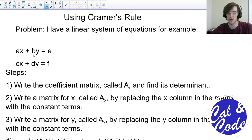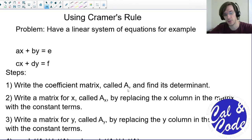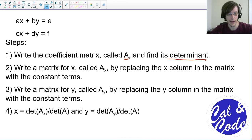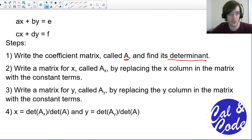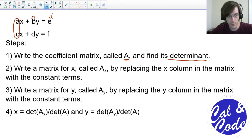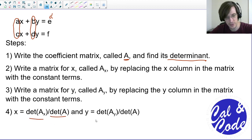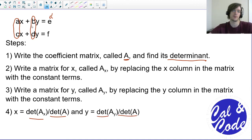Now let's look at how to use Cramer's rule. We write a coefficient matrix — call it matrix A — and find its determinant. Then we write a matrix for x, called Ax, where we replace the x column in our coefficient matrix with the constant terms. Then we write a matrix for y, Ay, where we replace the y column with the constant terms. For each one, we find the determinant. To find x, we take the determinant of Ax over the determinant of A. To find y, we take the determinant of Ay over the determinant of A. If there were more variables, we'd find the determinants of their matrices over the determinant of A.